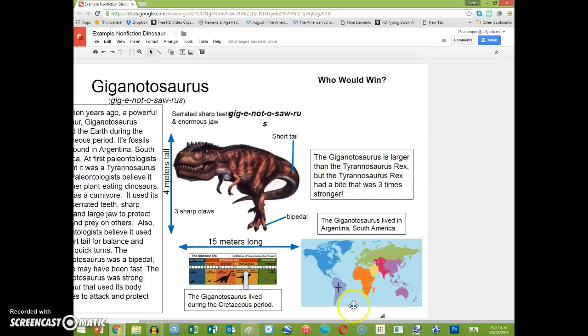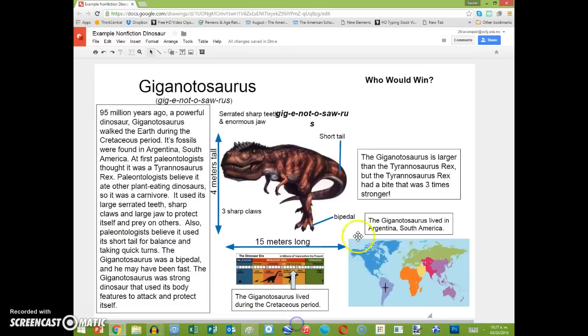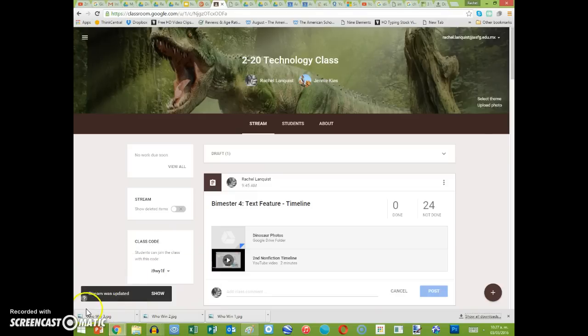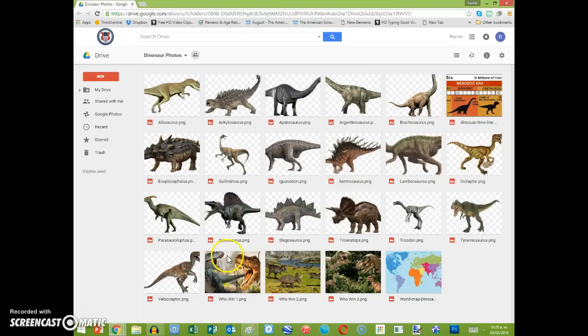Now you're ready to add a photo. You have a couple of options. If we go back to the Google Photos, there are, for example, Who Would Win one, two, and three. If you would like, you could choose one of those photos, or if you want to put the other dinosaur, if the dinosaur is here. So you can choose any of the photos in here.